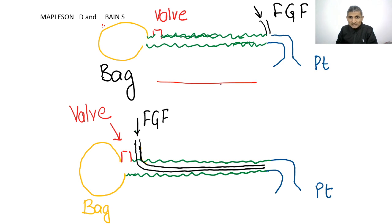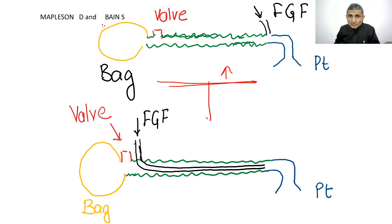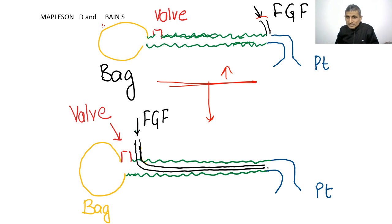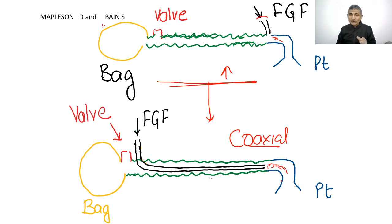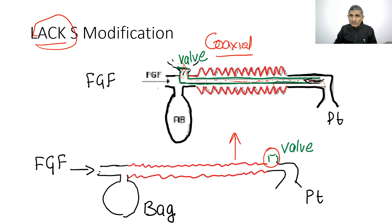Mapleson D has fresh gas flow toward the patient end and the valve at the other end — opposite to Mapleson A. Mapleson D is modified into the Bain circuit. In the Bain circuit, fresh gas is supplied through an inner tube within the outer tube — also a coaxial system. The key difference between Lack and Bain: in the Lack circuit the inner tube carries expiratory gases, while in the Bain circuit the inner tube carries inspiratory gases.